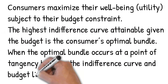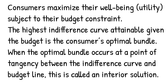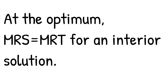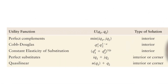Consumers maximize their well-being or utility subject to their budget constraint. The highest indifference curve obtainable given the budget is the consumer's optimal bundle. When the optimal bundle occurs at the point of tangency between the indifference curve and budget line, it is called an interior solution. At the optimal bundle, the marginal rate of substitution is equal to the marginal rate of transformation for an interior solution. There could be corner solutions for some utility functions.